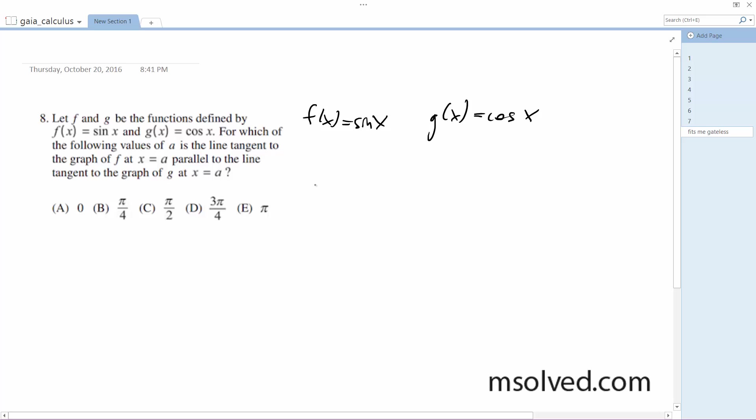The derivatives in this case are f prime of x equals cosine x, and g prime of x equals negative sine of x.